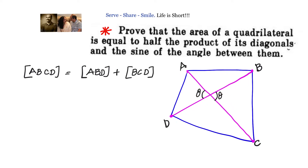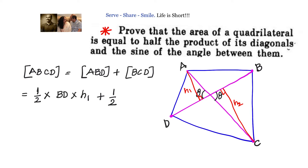We have to drop the altitudes from the opposite vertices. This altitude is H1 and this is H2, where H1 and H2 are the altitudes. So, area of ABD is given by half into base BD multiplied by height H1, plus area of triangle BCD which is half into base BD multiplied by height H2. Now, we have to understand what H1 and H2 are. Let us say the point of intersection of the diagonals is X.